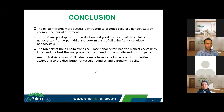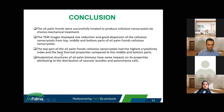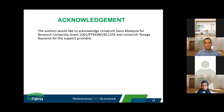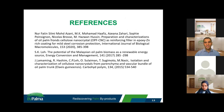In conclusion, from the overall findings, the OPF was successfully treated to produce CNC by chemo-mechanical treatment. The TEM images displayed size reduction and good dispersion of the CNC. The top part has the highest crystallinity and best thermal properties. The anatomical structure of oil palm biomass has impacts on its properties, attributable to the distribution of vascular bundles and parenchyma cells. I would like to acknowledge University of Science Malaysia and Universiti Tenaga National for the support provided. Thank you.